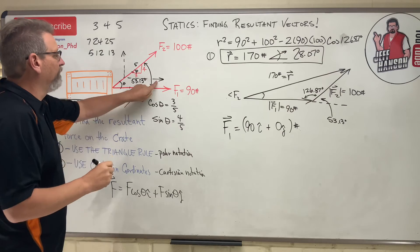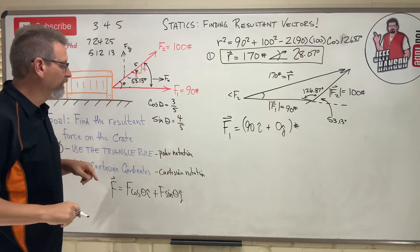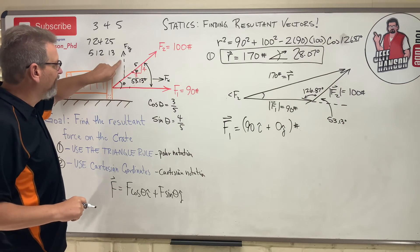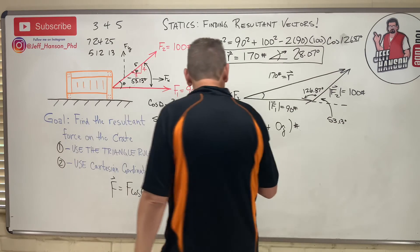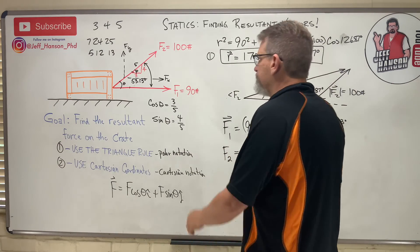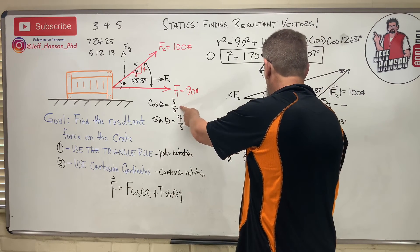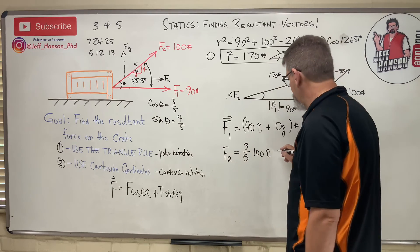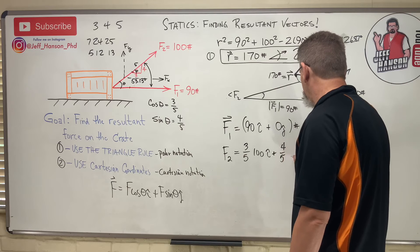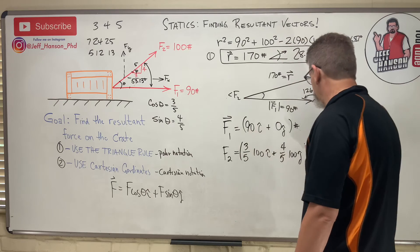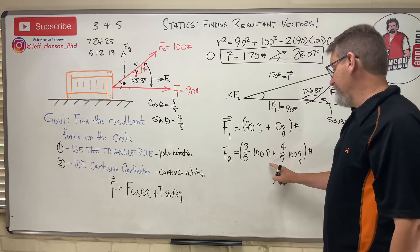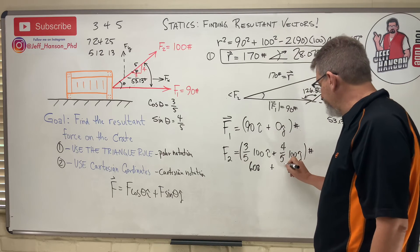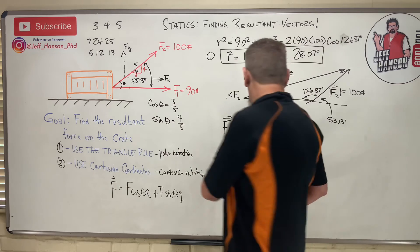Vector F2 has both an x-component and a y-component. Using the slope triangle fractions: F2 = (3/5)(100)î + (4/5)(100)ĵ = 60î + 80ĵ pounds. You could equivalently write 100·cos(53.13°)î + 100·sin(53.13°)ĵ — same result.